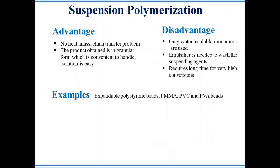The advantage of suspension polymerization is that there are no heat, mass, or chain transfer problems. The product obtained is in granular form, which is convenient to handle and easy to isolate. The disadvantage is that only water-insoluble monomers can be used, an emulsifier is needed to wash the suspending agent, and it requires a long time for high conversion. Expandable polystyrene beads, PMMA, PVC, and PVA beads can be synthesized using suspension polymerization.